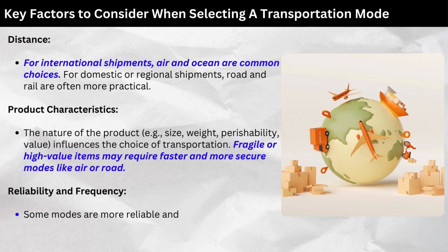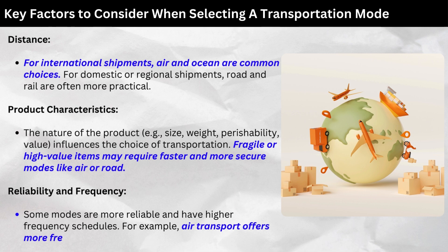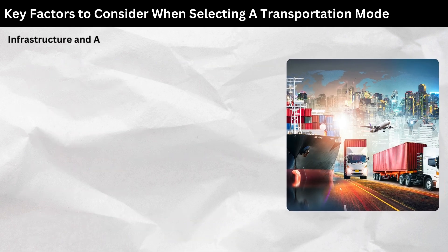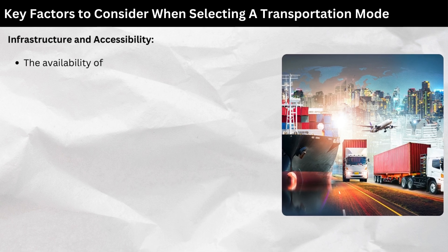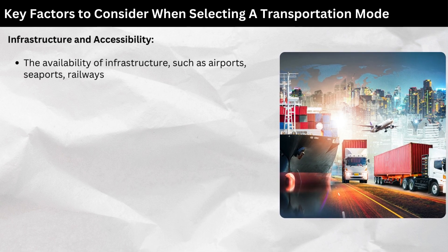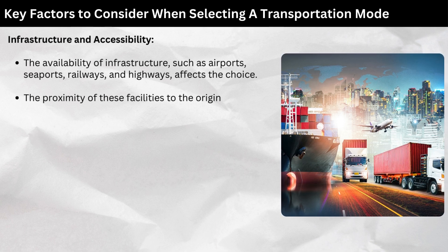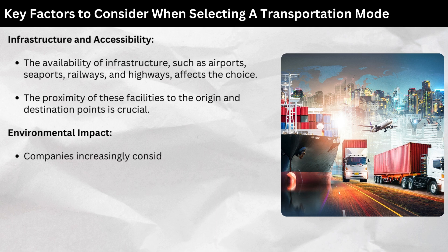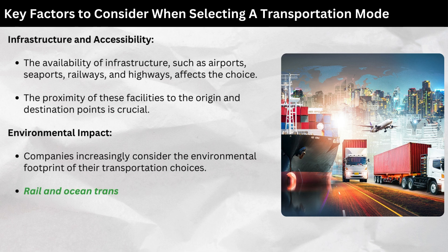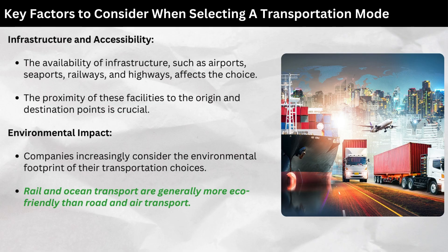Reliability and frequency: Some modes are more reliable and have higher frequency schedules. For example, air transport offers more frequent departures than ocean shipping. Infrastructure and accessibility: The availability of infrastructure such as airports, seaports, railways, and highways affects the choice — the proximity of these facilities to origin and destination points is crucial. Environmental impact: Companies increasingly consider the environmental footprint of their transportation choices. Rail and ocean transport are generally more eco-friendly than road and air transport.